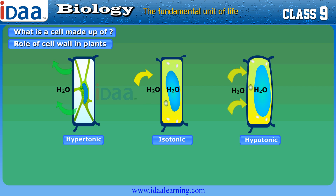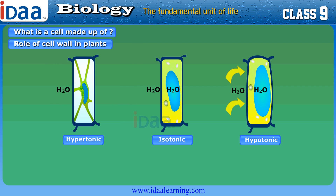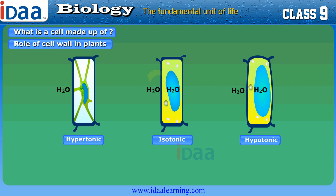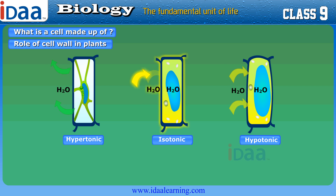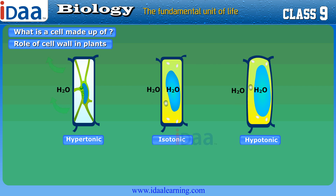When we put an animal cell or a plant cell into a solution of sugar or salt, three things would occur. The cell will gain water by osmosis when the outside solution is very dilute — such a solution is known as a hypotonic solution. There will be no net movement of water when the medium has exactly the same water concentration as the cell — such a solution is known as an isotonic solution. The cell will lose water by osmosis in a concentrated solution — such a solution is known as a hypertonic solution.